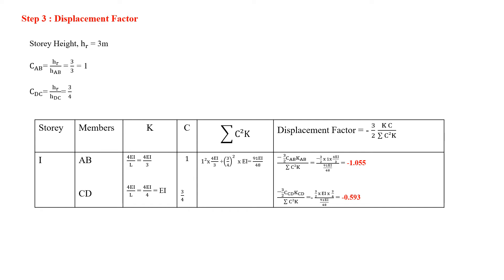We find the displacement factor for each column in the story using the formula: minus 3 by 2 times K times C, divided by sigma C squared times K, where C is the correction factor. The correction factor CCD is also computed. The displacement factors are then obtained for all columns.